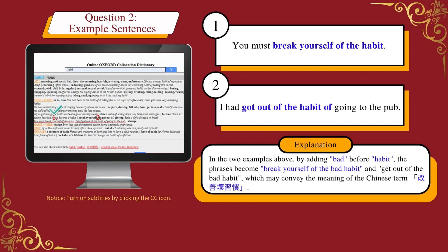Question two example sentences: one, 'You must break yourself of the habit'; two, 'I had got out of the habit of going to the pub.' In these examples, by adding 'bad' before 'habit', the phrases become 'break yourself of the bad habit' and 'get out of the bad habit', which convey the meaning of the Chinese term 改善坏习惯.